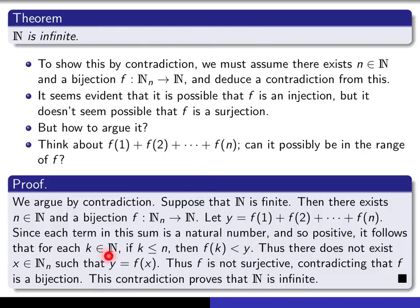Since each term in this sum is a natural number and therefore positive, it follows that for each k in the natural numbers, if k is less than or equal to n, then f(k) is smaller than y. Because we've listed all of the f(k) values here and we're adding them all together, so that must be strictly bigger than any particular term in the sum. Well, that proves there's no x in ℕₙ such that y equals f(x).